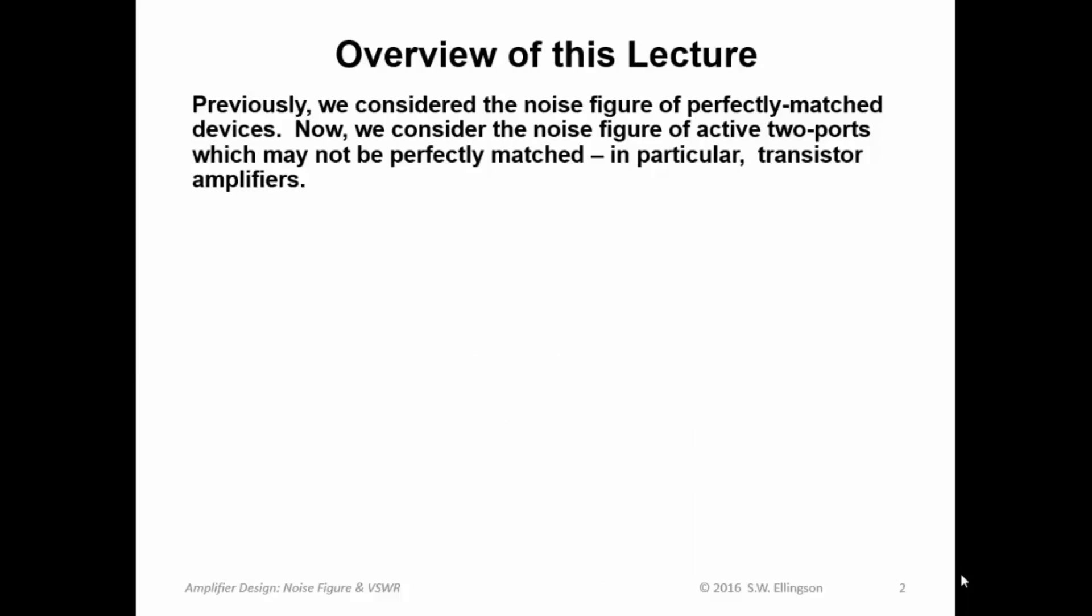Here's an overview of this lecture. Previously, we considered the noise figure of perfectly matched devices. Now we consider the noise figure of active two ports which may not be perfectly matched, in particular transistor amplifiers, because recall our method for designing for gain and stability involved selectively mismatching the inputs and outputs of the two ports representing the transistors. So now when we consider the noise figure of completed amplifiers, we must have a way of accounting for this mismatch.